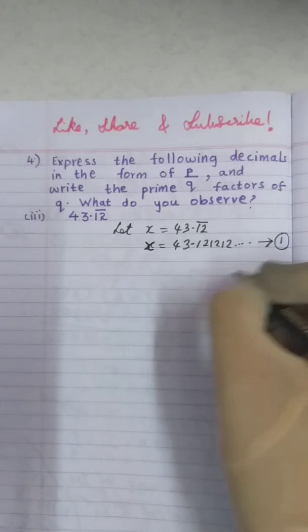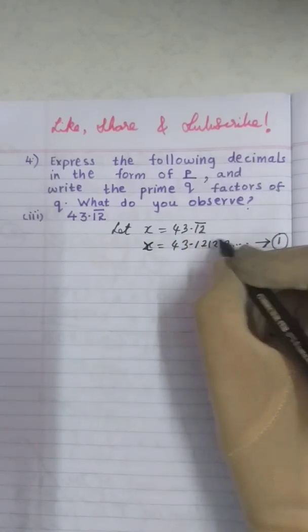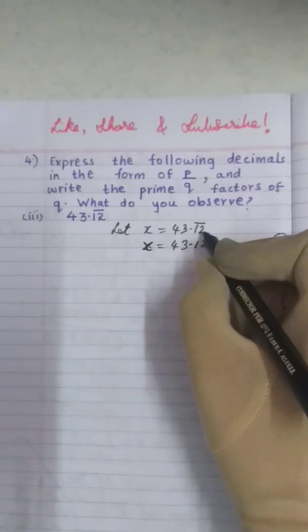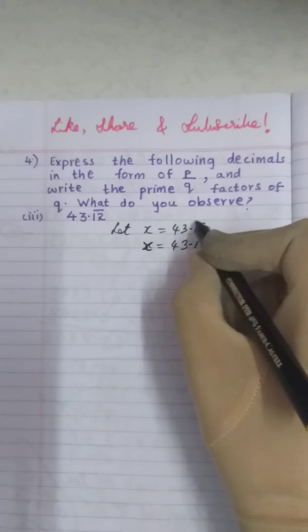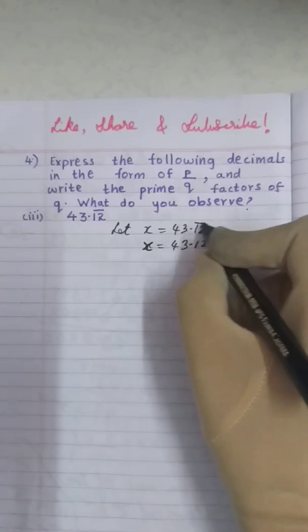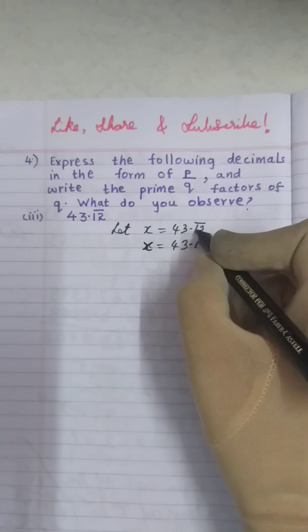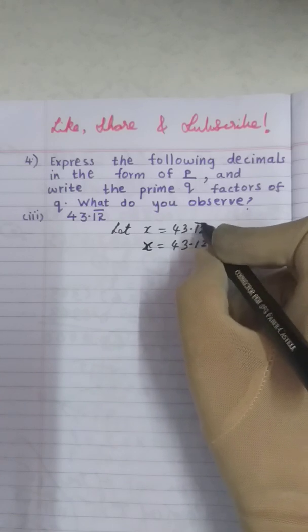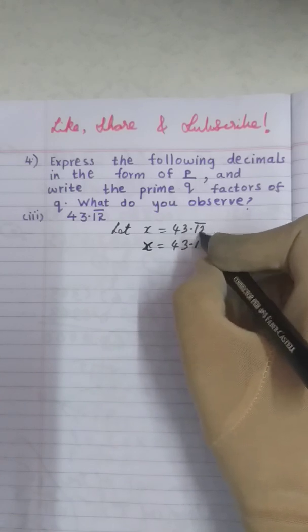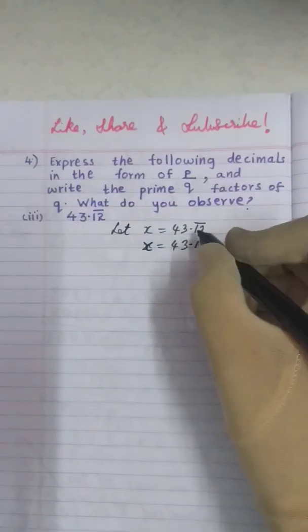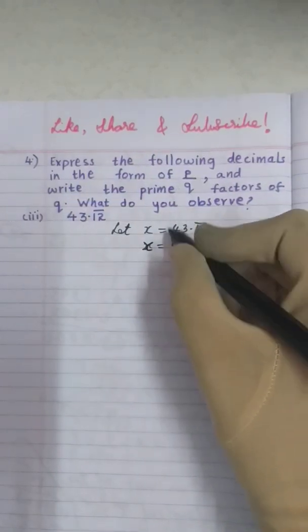Now here what is the periodicity? The periodicity is 2. Periodicity means how many digits are there which are repeating, means how many digits bar is there. So here we see that on these two digits bar is there. It means the periodicity is 2. If periodicity is 2 then you have to multiply this number with 100.